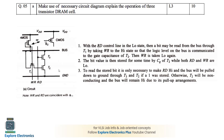Now let us understand the write operation. WR corresponds to the write control signal and RD corresponds to the read control signal. In the write operation, WR needs to be made 1 and RD made 0. When RD is equal to 1 we can read the data; when WR is equal to 1 we can write the data.